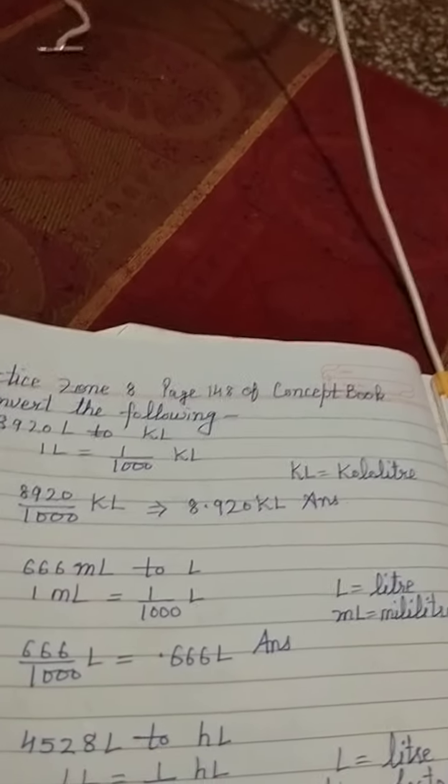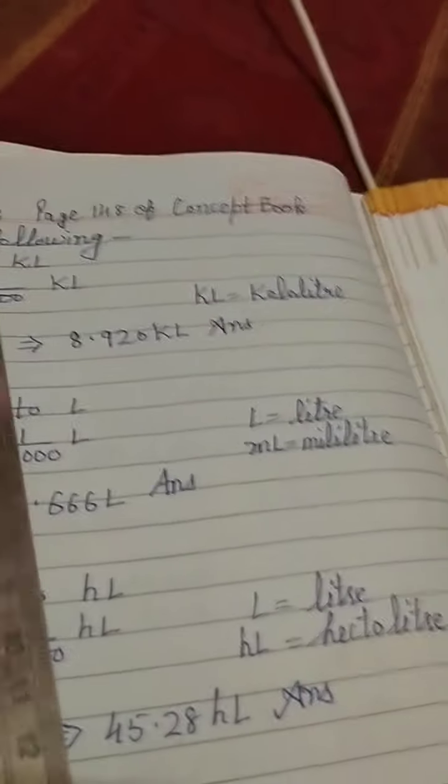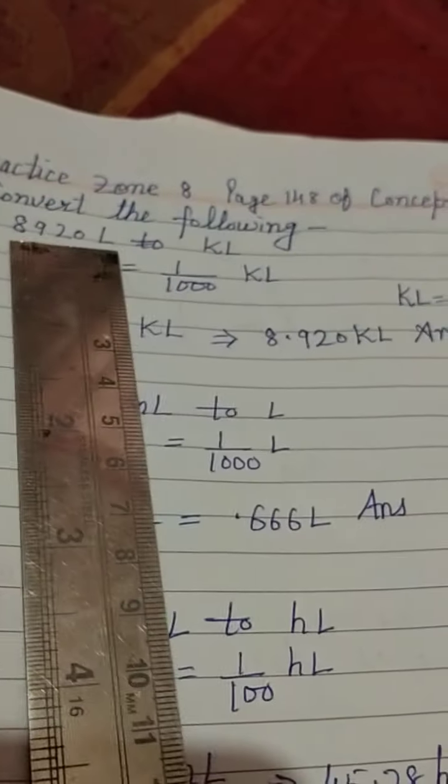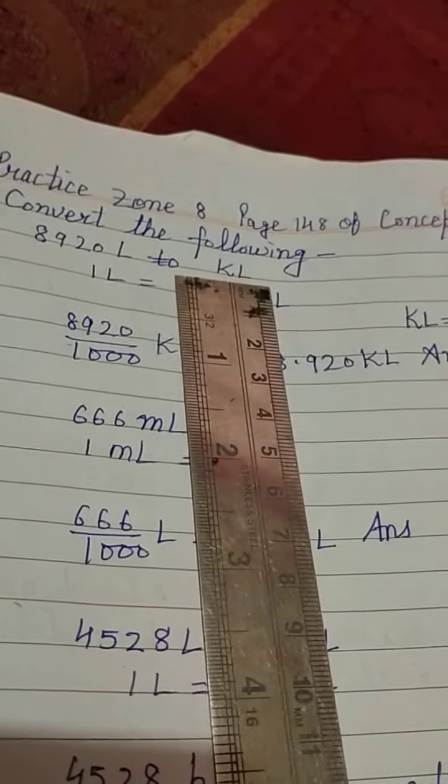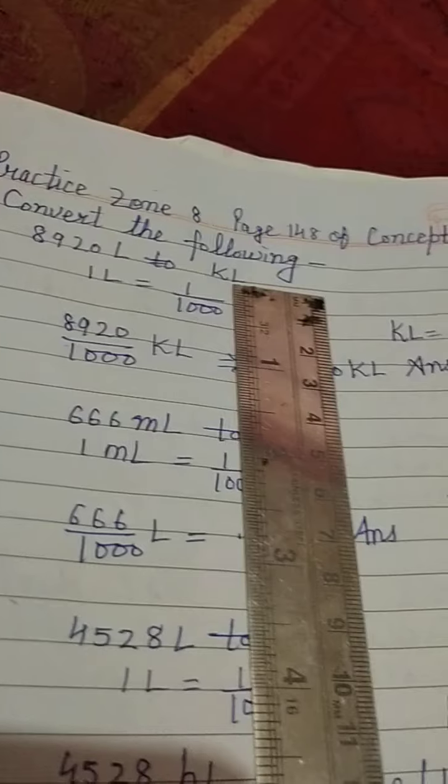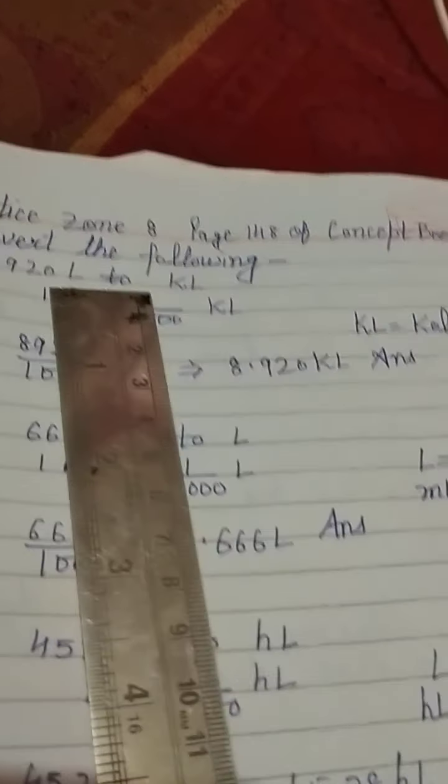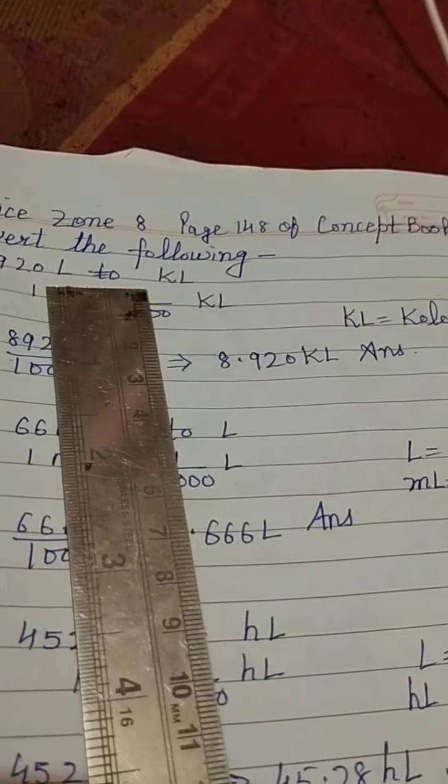So we are having this exercise, convert the following. First question is 8920 litre to kilolitre. As you know kilolitre is bigger unit, higher unit, and litre is smaller unit. So smaller unit to bigger unit, for this we have to use divide.